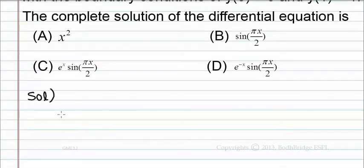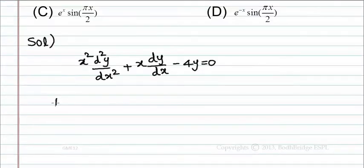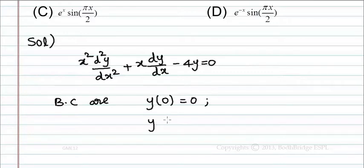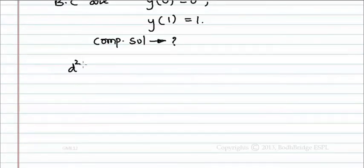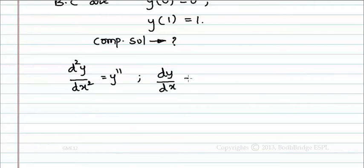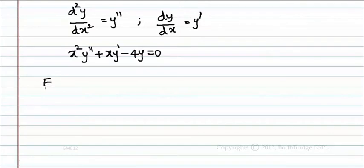The given differential equation is x² d²y/dx² + x dy/dx − 4y = 0, with boundary conditions y(0) = 0 and y(1) = 1. Let y'' = d²y/dx² and y' = dy/dx. Then the equation becomes x² y'' + x y' − 4y = 0. Now let us apply the Euler-Cauchy equation in this case.